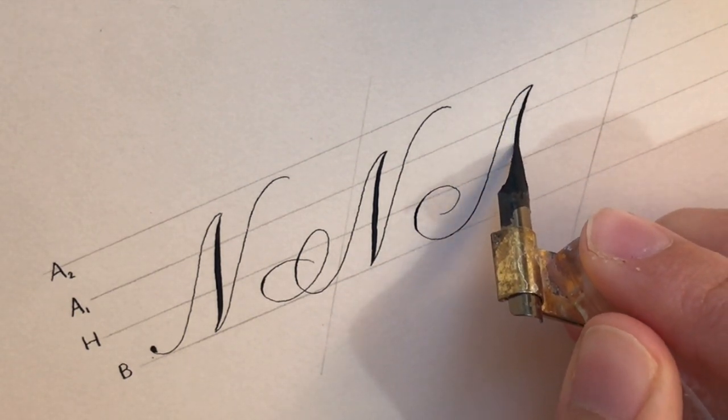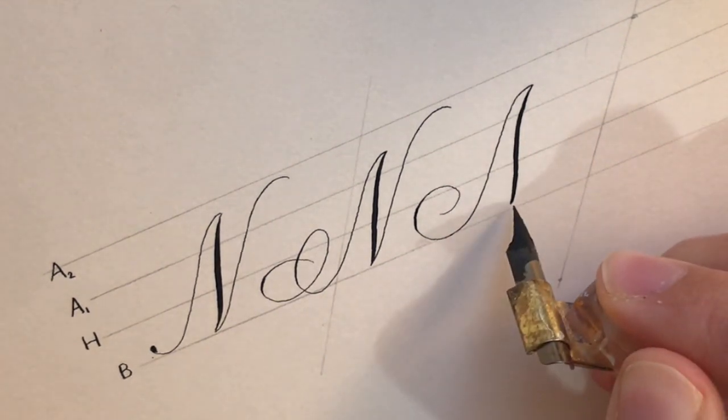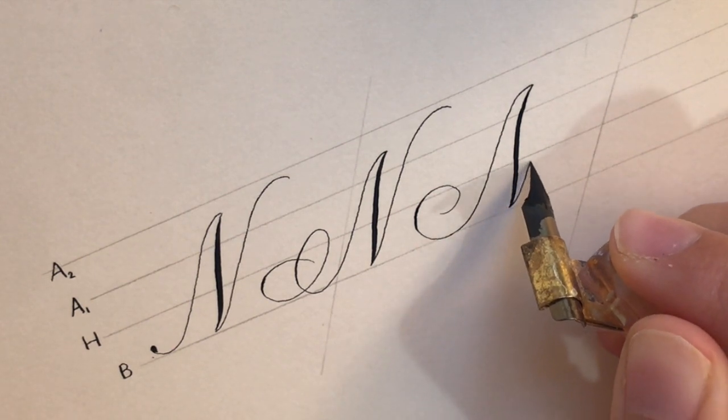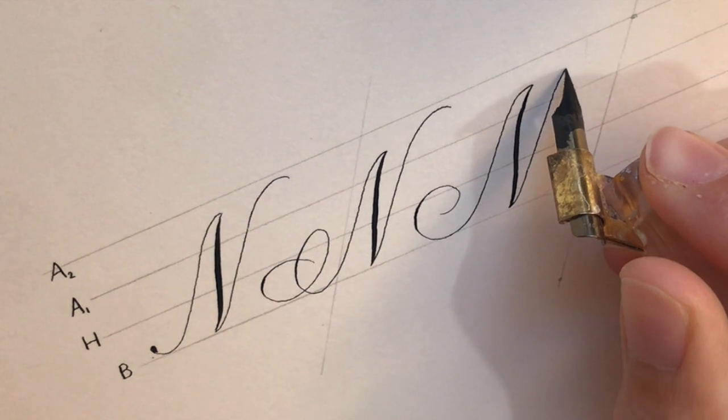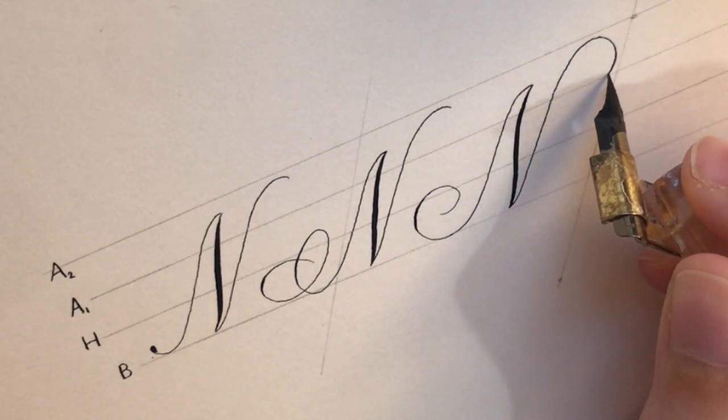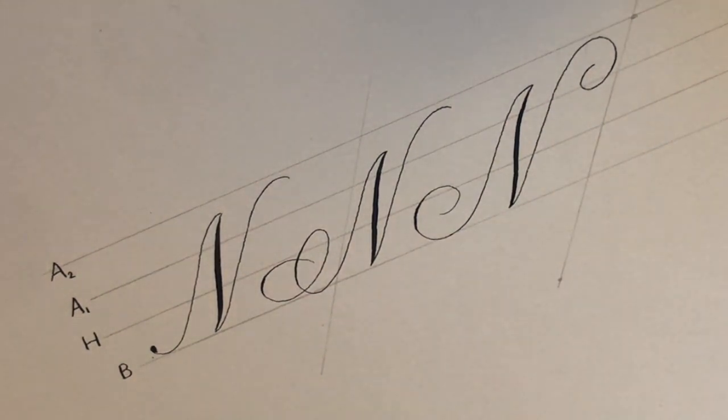Then back down with that swelled stroke, and finally back up with a hairline. I'm going to mirror the top of this hairline to the flourish at the baseline, or attempt to. That is a third version of the capital N.